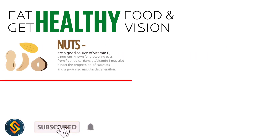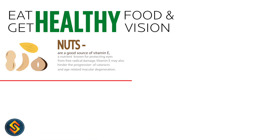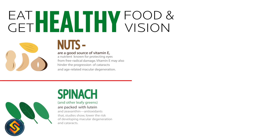Nuts are a good source of vitamin E, a nutrient known for protecting eyes from free radical damage. Vitamin E may also hinder the progression of cataracts and age-related macular degeneration. Spinach and other leafy greens are packed with lutein and zeaxanthin, antioxidants that studies show lower the risk of developing macular degeneration and cataracts.